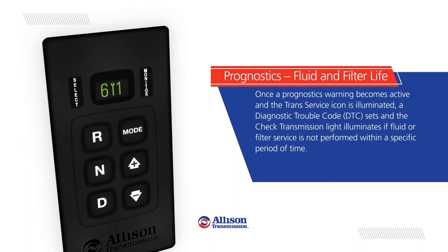Once a prognostics warning becomes active and the trans-service icon is illuminated, a diagnostic trouble code (DTC) sets and the check transmission light illuminates if fluid or filter service is not performed within a specific period of time.